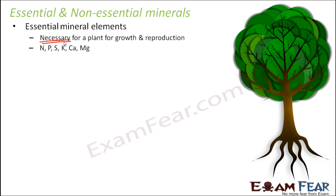Examples of essential mineral elements are nitrogen, phosphorus, sulfur, potassium, calcium, and magnesium. These are extremely necessary for growth and reproduction. If they are not there, growth is going to stop, reproduction is going to stop, and eventually the plant life cycle will not be completed.